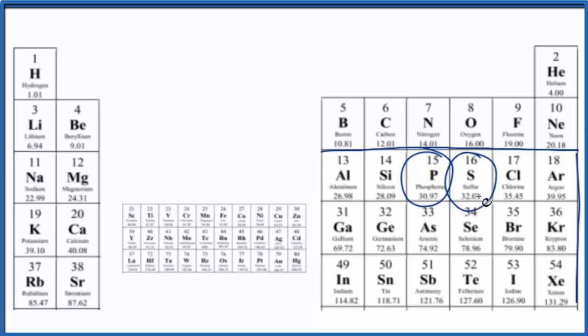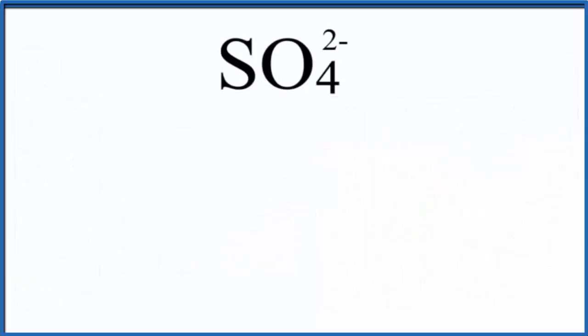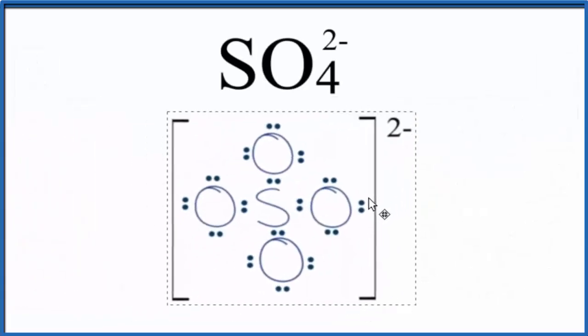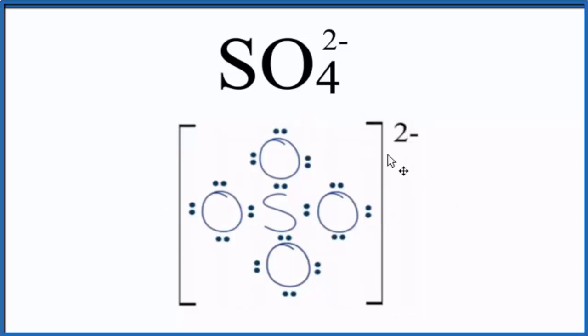Let's take a look at an example: the sulfate ion. If we drew a Lewis structure for the sulfate ion, SO4 2-, and followed all the rules for writing Lewis structures, we'd come up with this.